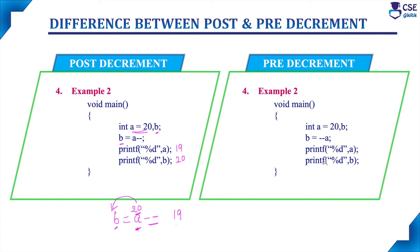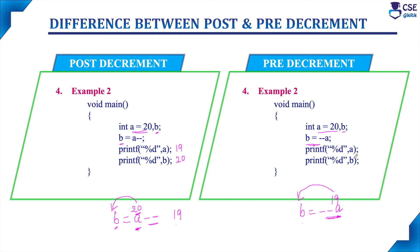Similarly, in pre decrement, a value is assigned as 20 and we use another variable b. The statement is b equal to minus minus a — this is a pre decrement operator. Pre decrement means the variable value gets decremented by 1 first and that decremented value is assigned to the left-hand side variable. So a is decremented from 20 to 19, and this decremented value 19 is assigned to b. If you print a and b, a will print 19 and b will also print 19.